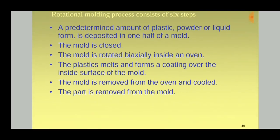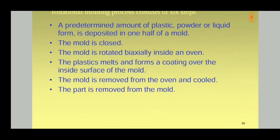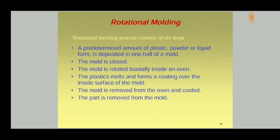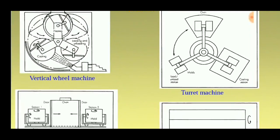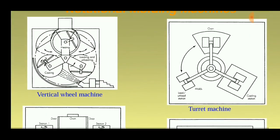Then the mold is closed and it is rotated biaxially — that is, it can rotate about both the X and Y axes inside an oven. The heat melts the plastic and forms a coating on the inside surface of the mold. Then the mold is cooled and finally the part is removed from the mold.